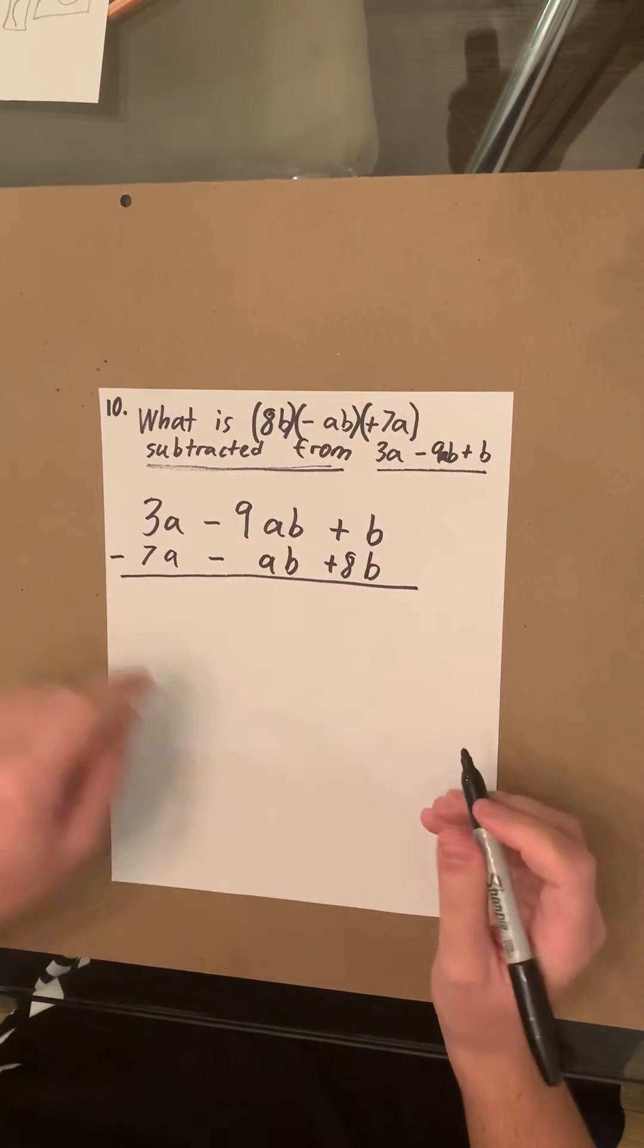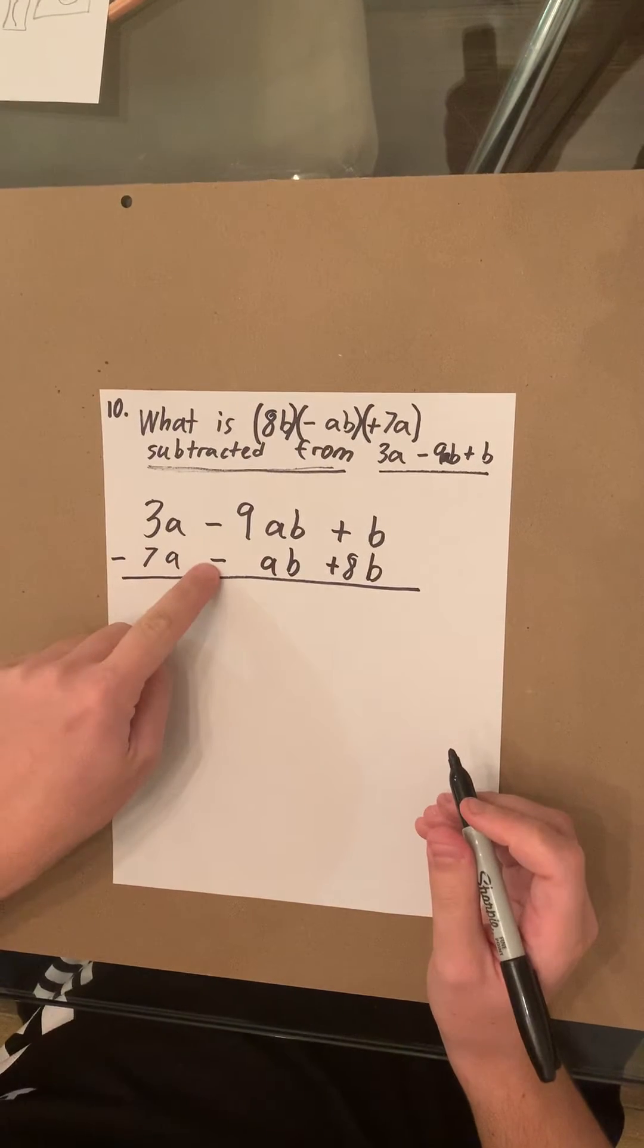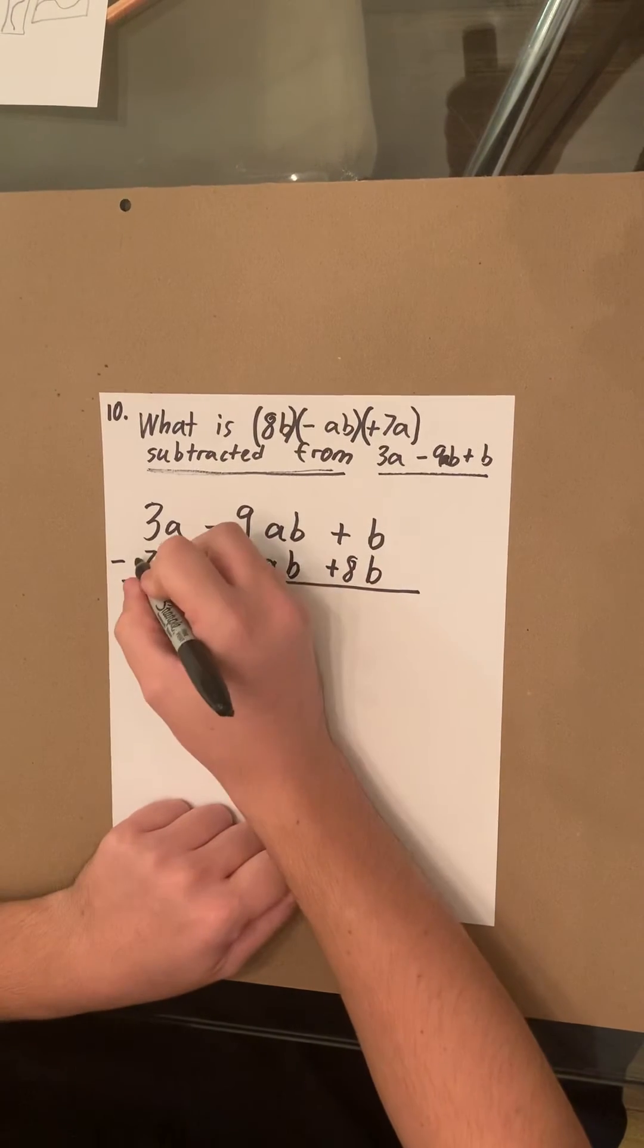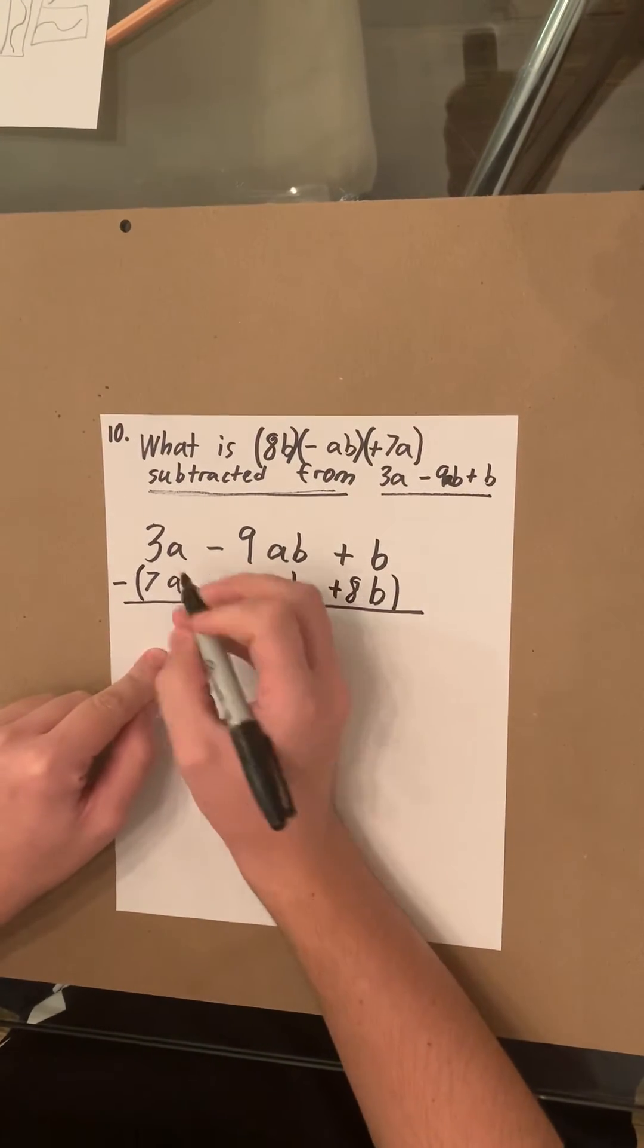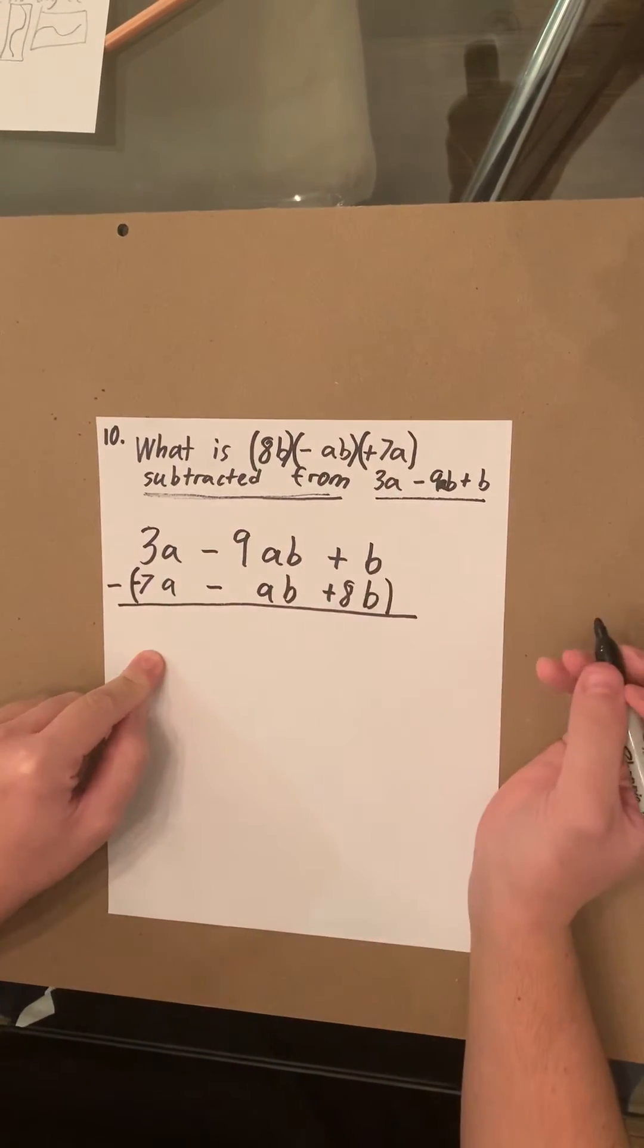And there's an issue about when you subtract into an equation with multiple signs. Every sign on that equation gets flipped. So this positive 7A becomes a negative 7A.